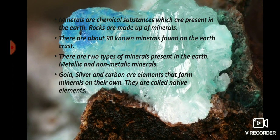There are about 90 known minerals found on the earth's crust. There are two types of minerals present in the earth: metallic minerals and non-metallic minerals. You know that plants get minerals from the soil — minerals like iron, calcium, carbon, etc. are found on the earth's surface. Gold, silver, and carbon are elements that form minerals on their own; they are called native elements.